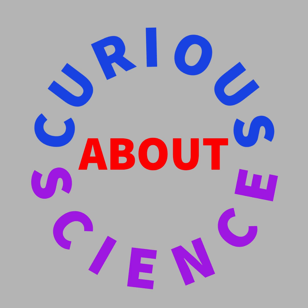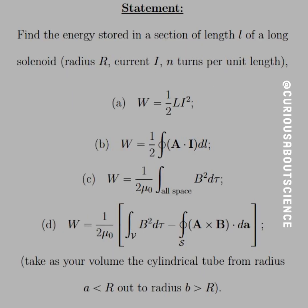Alrighty, welcome back. What kind of physics discussion would this be without talk about energy or work with inductance? So the statement reads, find the energy stored in a section of length L of a long solenoid, radius R, current I, and N turns per unit length. Alright, and we want to do this using four methods.